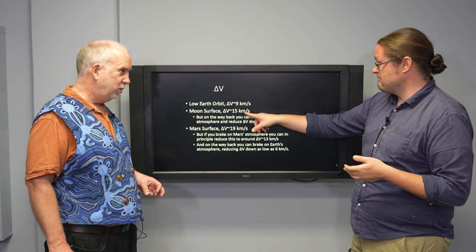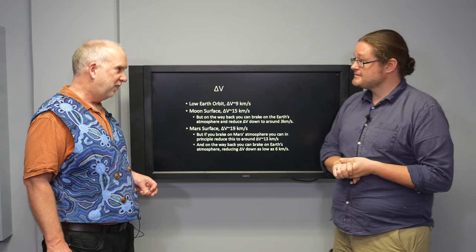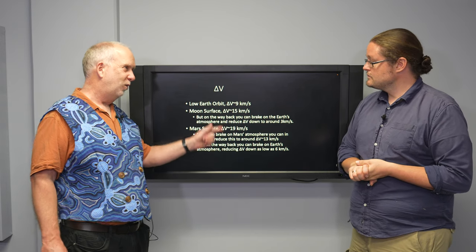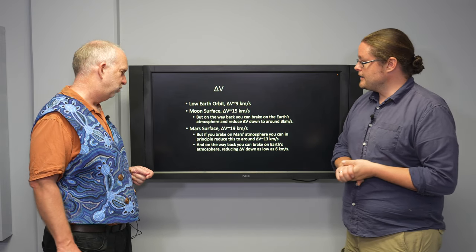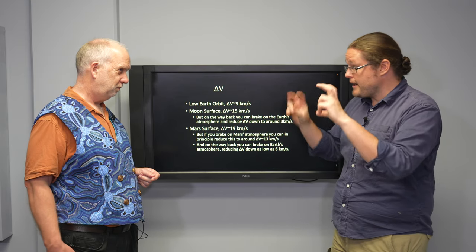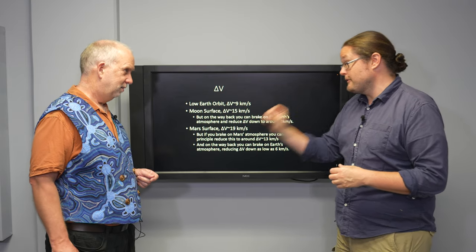So it's actually easier than the Moon. So in principle, if you use lots of aerobraking on Mars, Mars is a less delta V than the Moon. It's the easier place to get to. And it doesn't matter that it is further away because what we care about is the delta V.